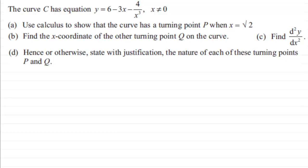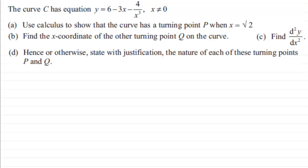Now we'll run through the question. The curve C has equation y equals 6 minus 3x minus 4 over x cubed, where x doesn't equal zero. We've got to use calculus to show that the curve has a turning point P when x equals root 2. Using calculus means to use differentiation, and that is what we're going to be doing here.